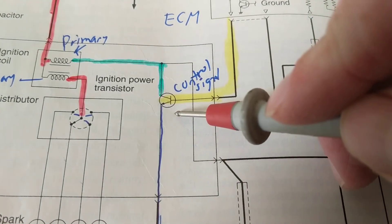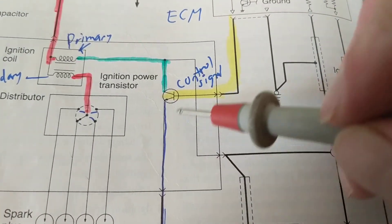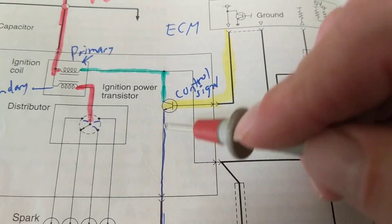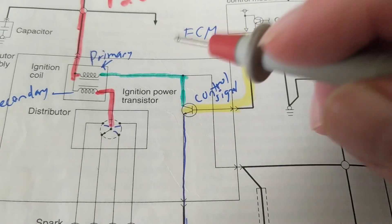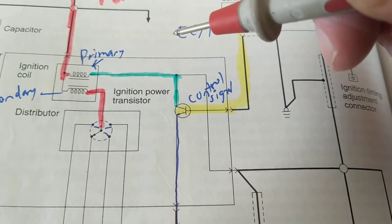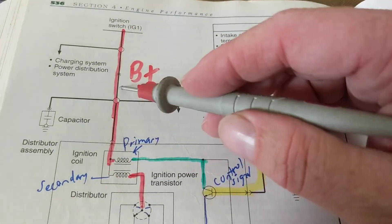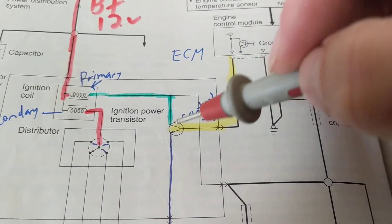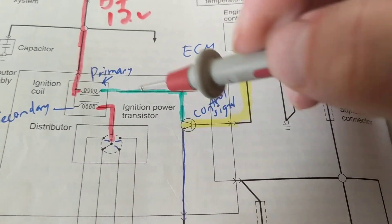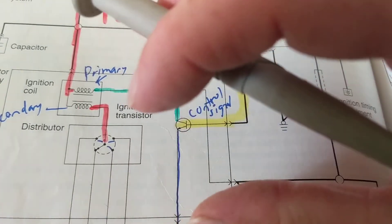Or a transistor can be used as a switch — on and off, like the switch we had before. We're going to switch it on and off, and what we're doing by that is turning the primary on and off. The B-plus is the top side of the primary; the bottom side is the one being toggled on and off.